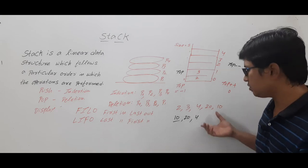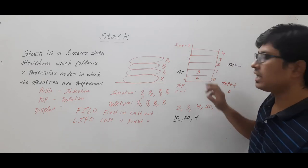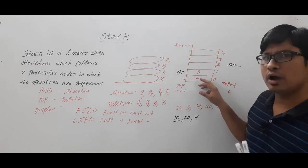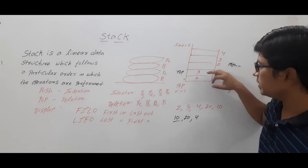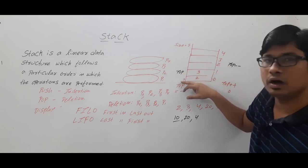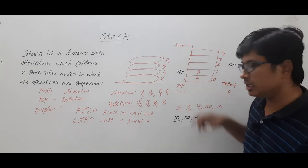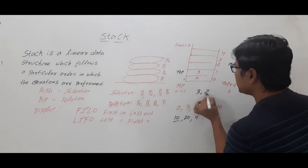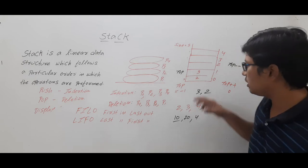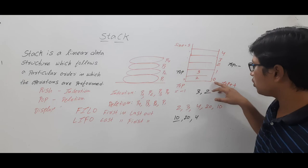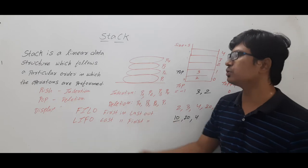Now for display: the remaining elements are 3 and 2. Display goes from the top down to index 0, so you display element 3 first, then element 2. You always display from top to index 0 when implementing using an array. So the elements in the stack are 3, 2. This covers push, pop, and display operations.